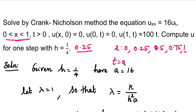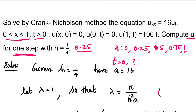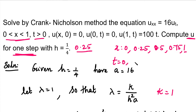Since we compute u for one step, we add one value to t. We use k = 1 as the common difference between t values. Starting from the lower limit 0 and adding k, we get the next t value.